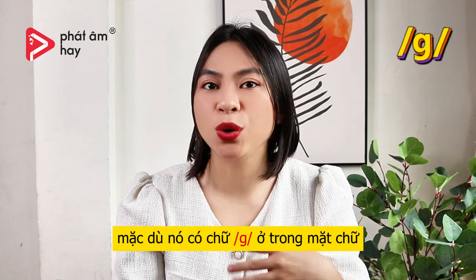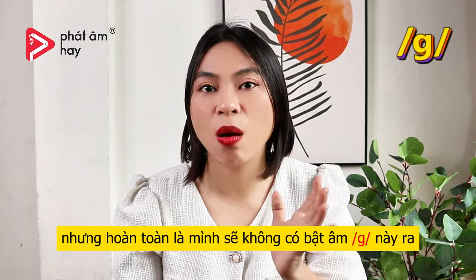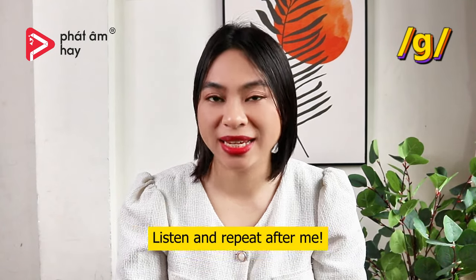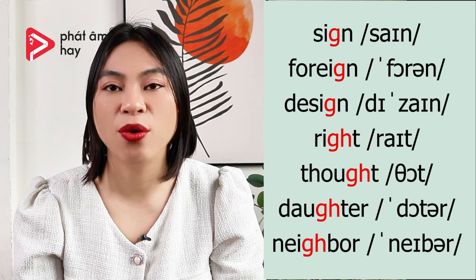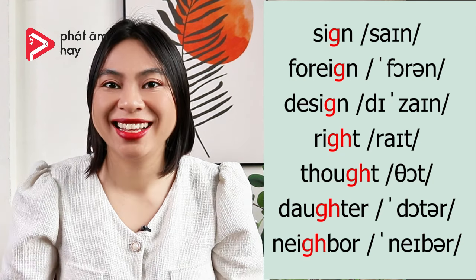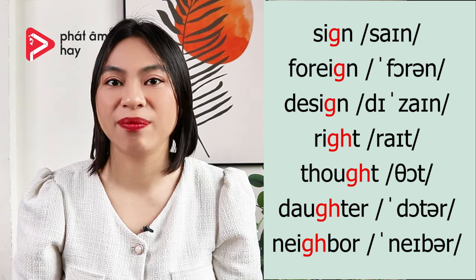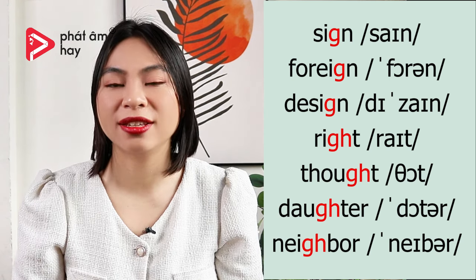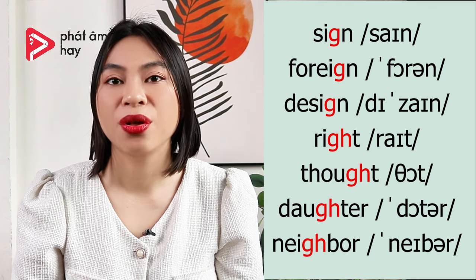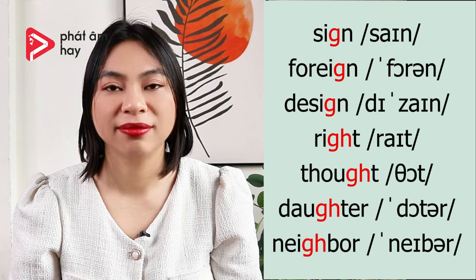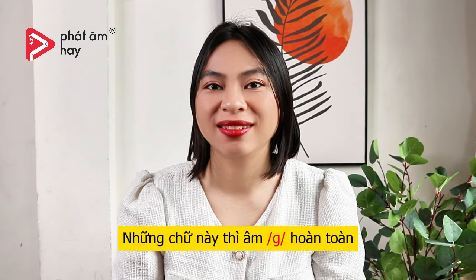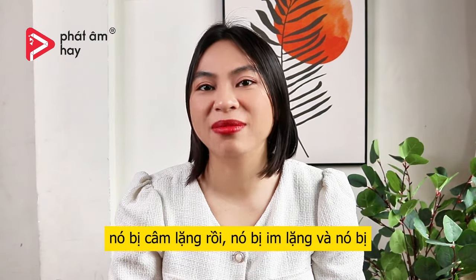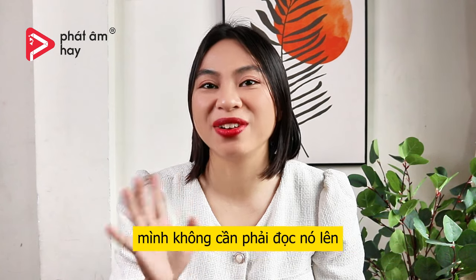Sau đây là một số các chữ khác. Mặc dù nó có chữ G ở trong mặt chữ nhưng hoàn toàn mình sẽ không bật âm G này ra — G này được gọi là âm câm. Bây giờ mình sẽ đọc trước và các bạn lặp lại theo mình nhé. Sign. Sign. Foreign. Design. Write. Write. Thought. Thought. Daughter. Daughter. Neighbor. Neighbor. Những chữ này thì âm G hoàn toàn bị câm lặng rồi — mình không cần phải đọc nó lên.